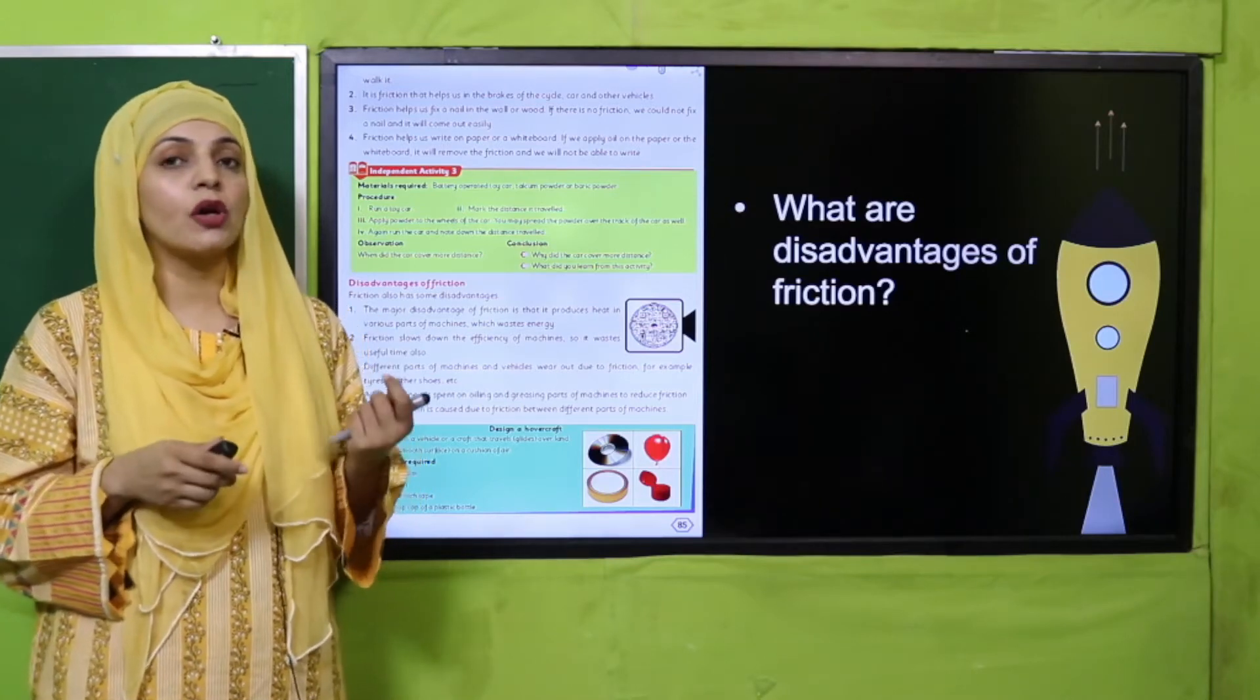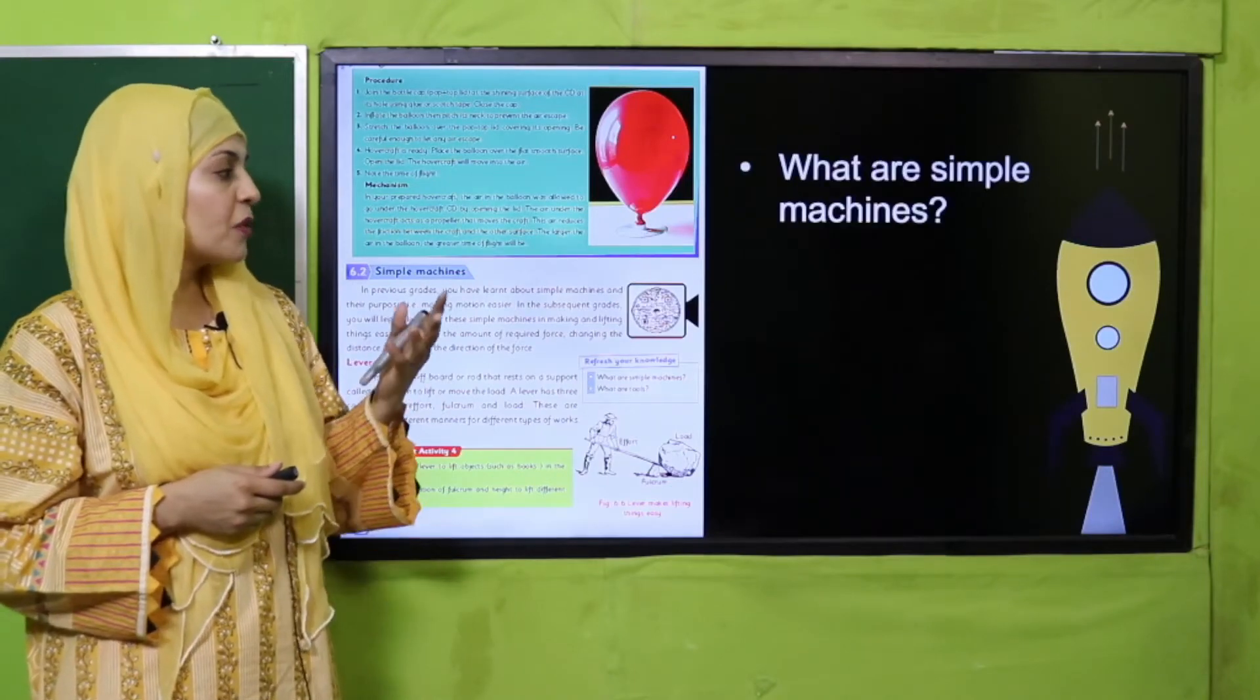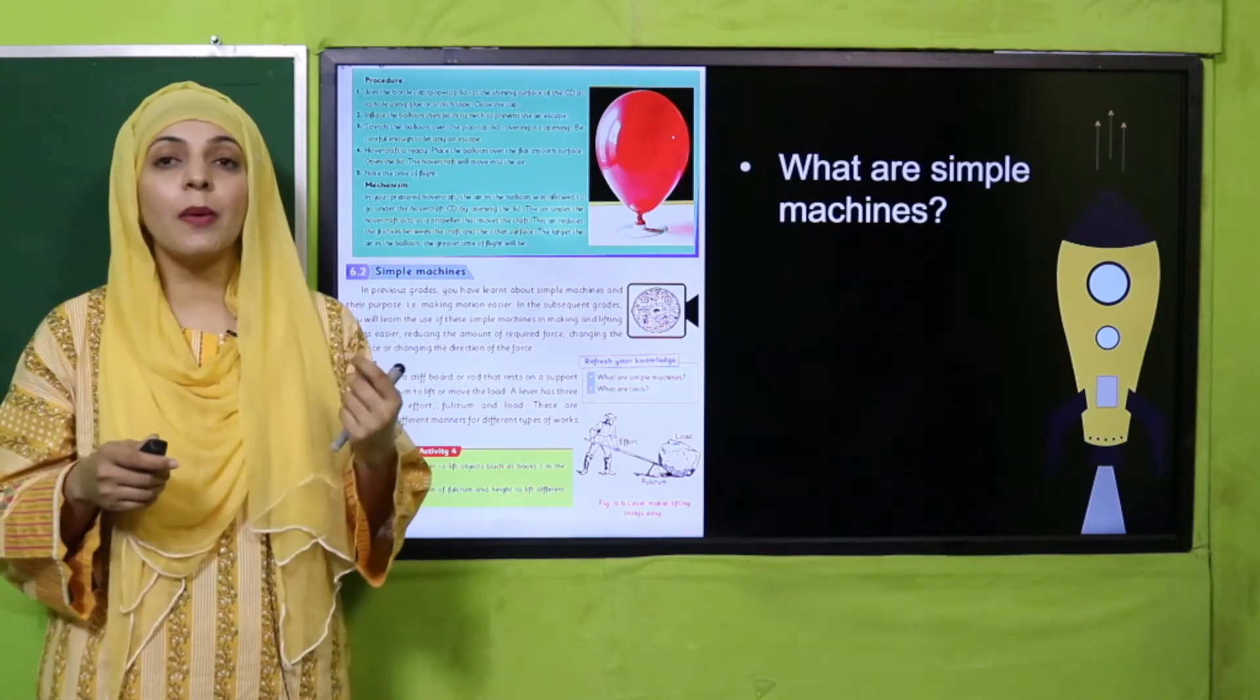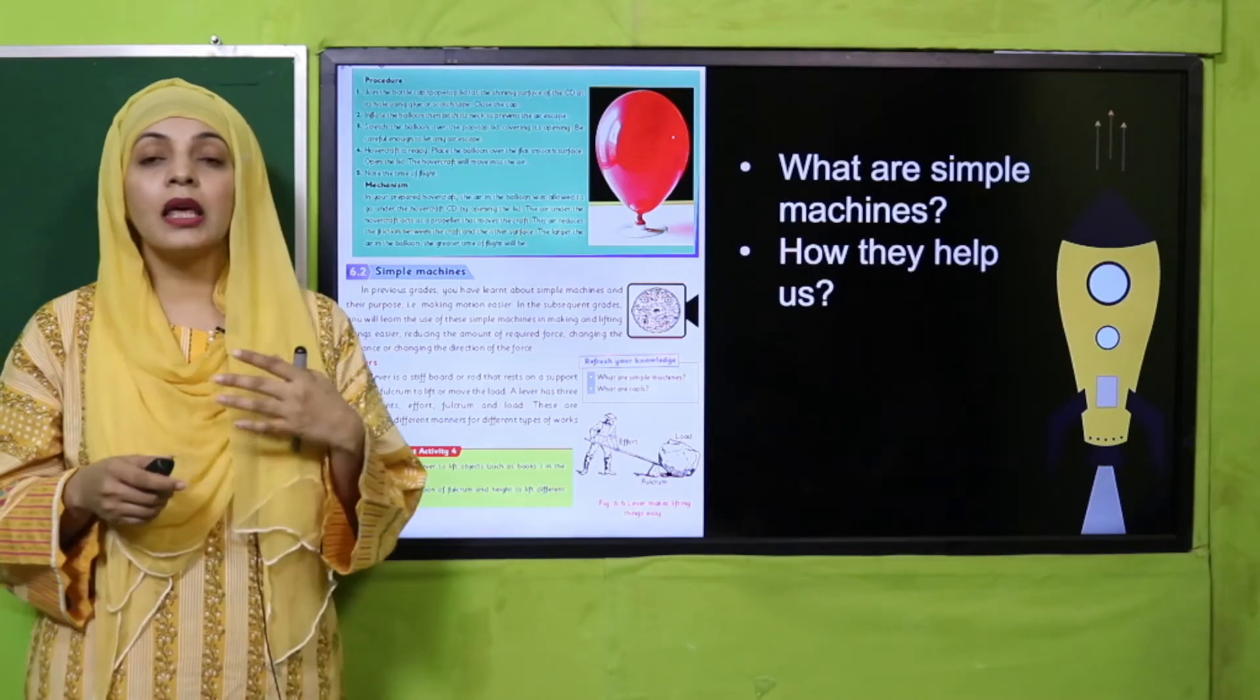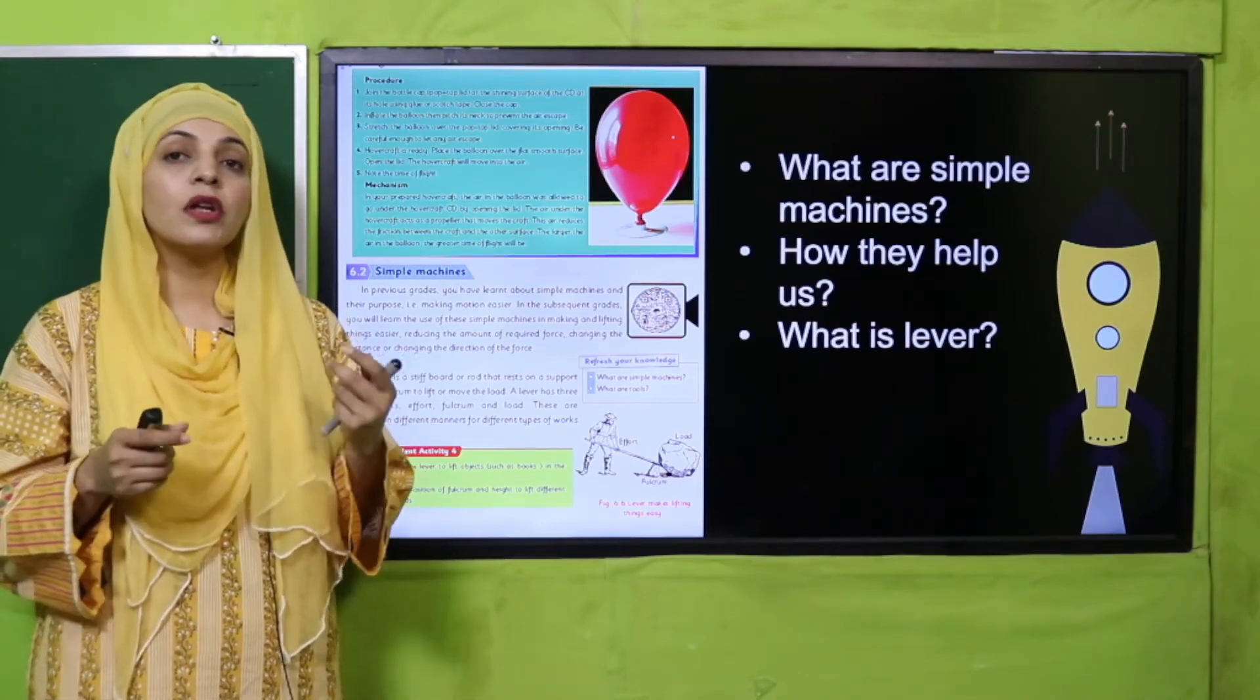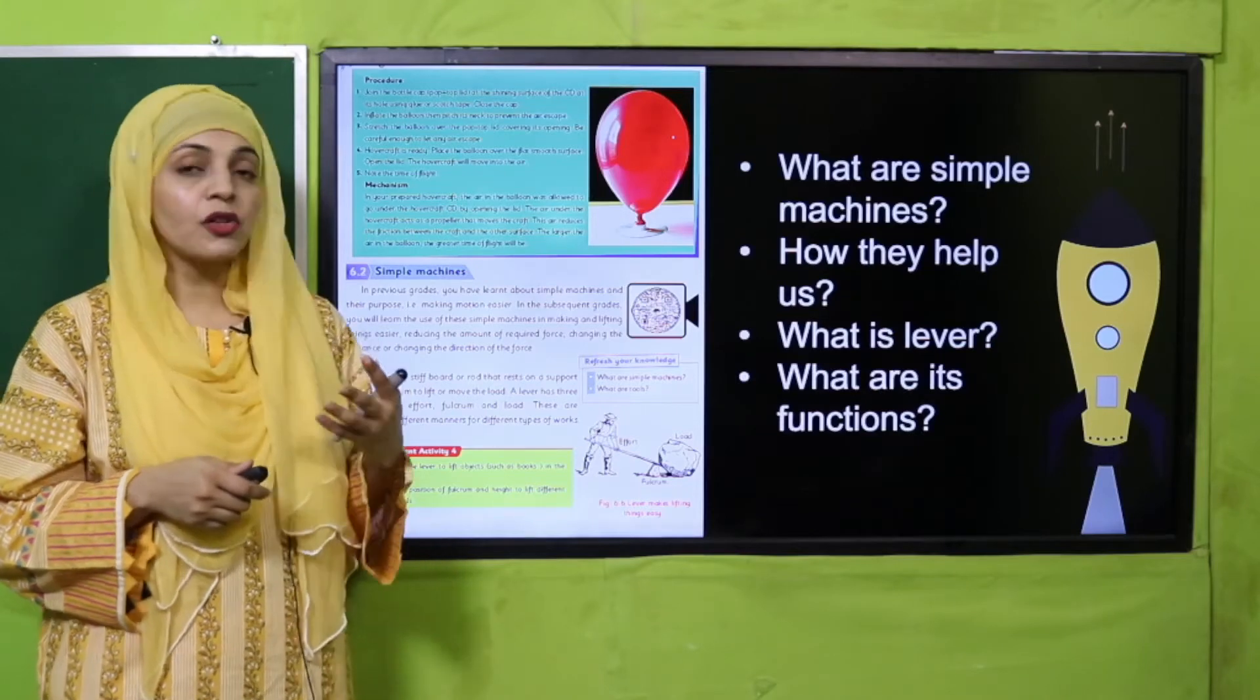My dear students, then we discussed what are simple machines. Simple machines are such machines that make our work very easy. How they help us: they reduce our effort and save our time. What is a lever? Lever is a rod. What are its functions?